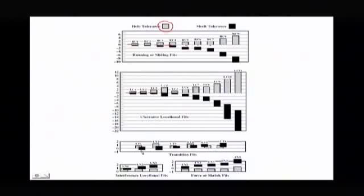Then you have your transition fits - sometimes it's clearance, sometimes it's interference because they overlap a little bit. Your interference fits, these where the shaft is always bigger than the hole. And same thing with your force and shrink fits, where you get the shaft a lot bigger than the hole. So the different fits and a graph showing how they go together.